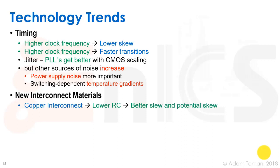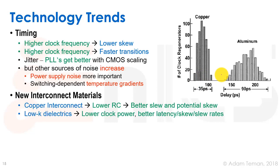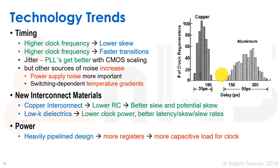The introduction of copper interconnects provided lower RC, which gives better slew and potentially better skew. With aluminum we had larger delays; going to copper not only reduced delays but the spread was smaller, which is much better for skew. Low-k dielectrics introduced as the interlayer dielectric give us lower clock power due to less capacitance, better latency, improved skew, better slew rates, and better coupling capacitance.